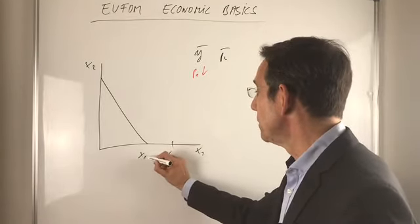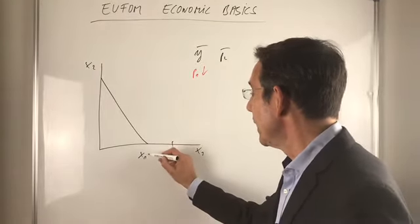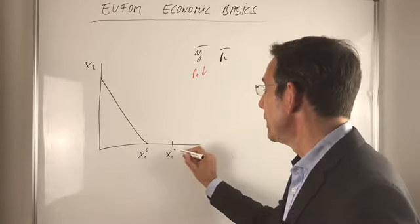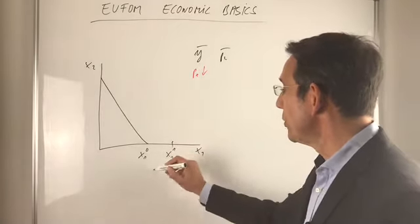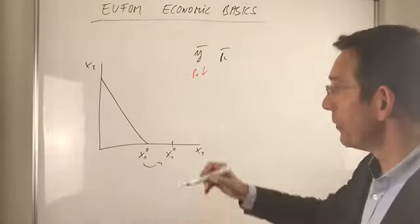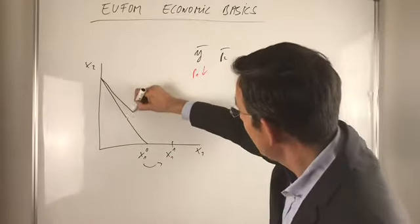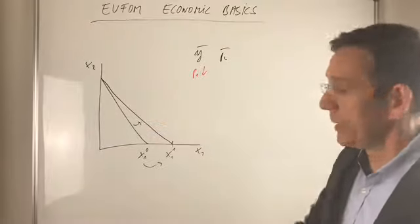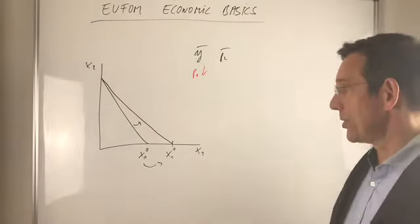And so we get more of that. Here we get, let's say, x1 zero. And here we get x1 one. Just to say, well, we get more of that. So we know that the budget line rotates in such a case.